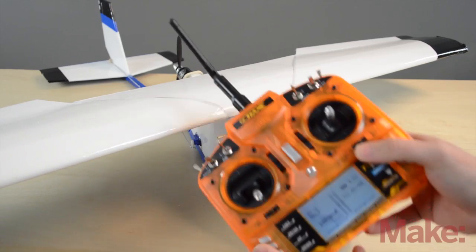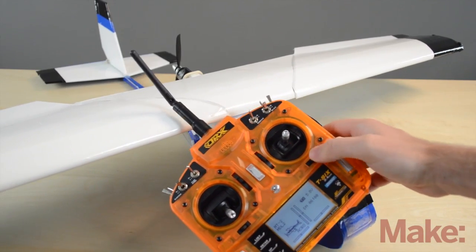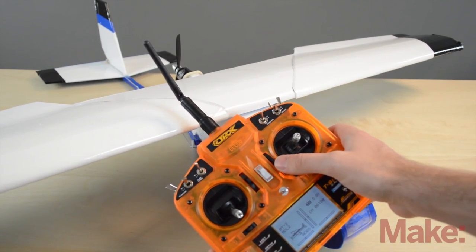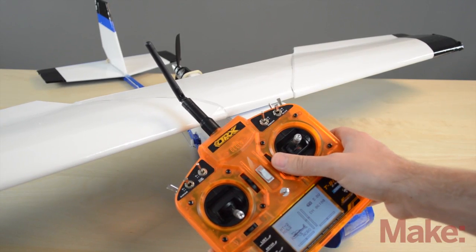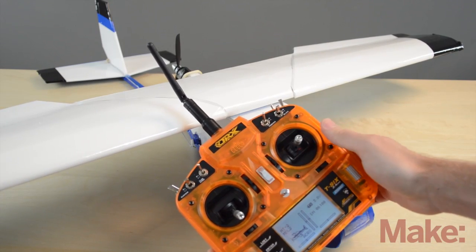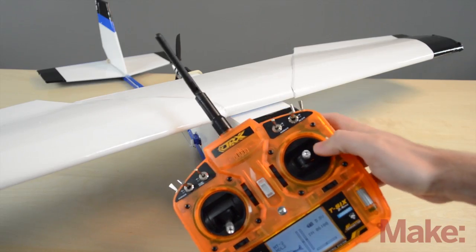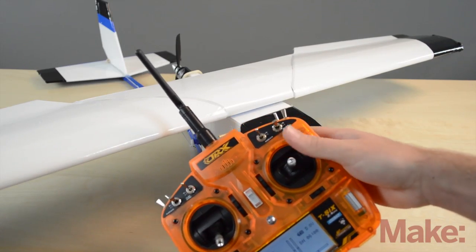So you might have been wondering what all these switches next to the sticks do, and these are called trim tabs. They allow you to trim out your airplane or get it to fly better.